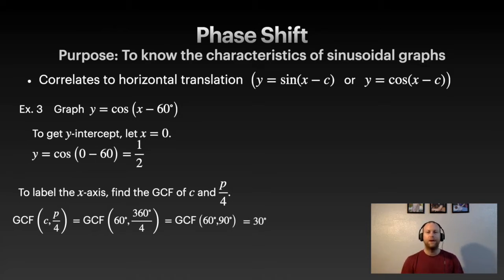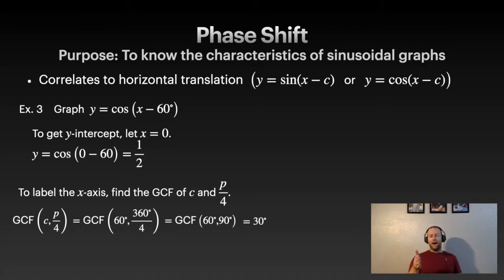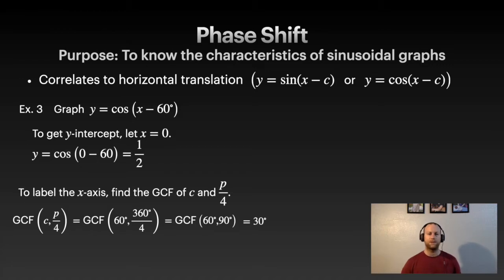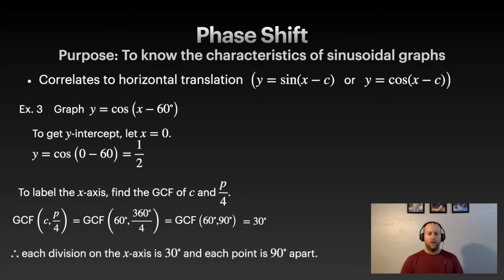The period is 360 since there's no b value, so I need the GCF of 60 and 90 (which is 360 divided by 4). The greatest common factor is 30. This tells me how to split up the x-axis — into increments of 30. The period over 4, which is 90 degrees, tells me how far apart the key points are.